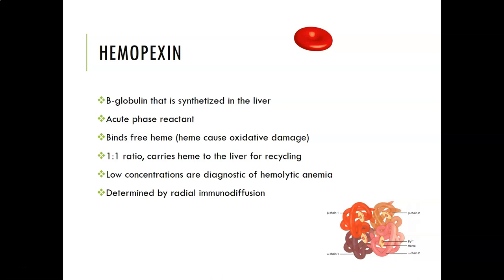Hemopexin is a beta globulin synthesized in the liver and is an acute phase reactant. It binds free heme, because heme causes oxidative damage and cannot be left unchecked. It binds heme at a one-to-one ratio and carries it to the liver for recycling. Low concentrations are diagnostic of hemolytic anemia because hemopexin gets used up transporting all of that free heme. It is usually determined by radial immunodiffusion.